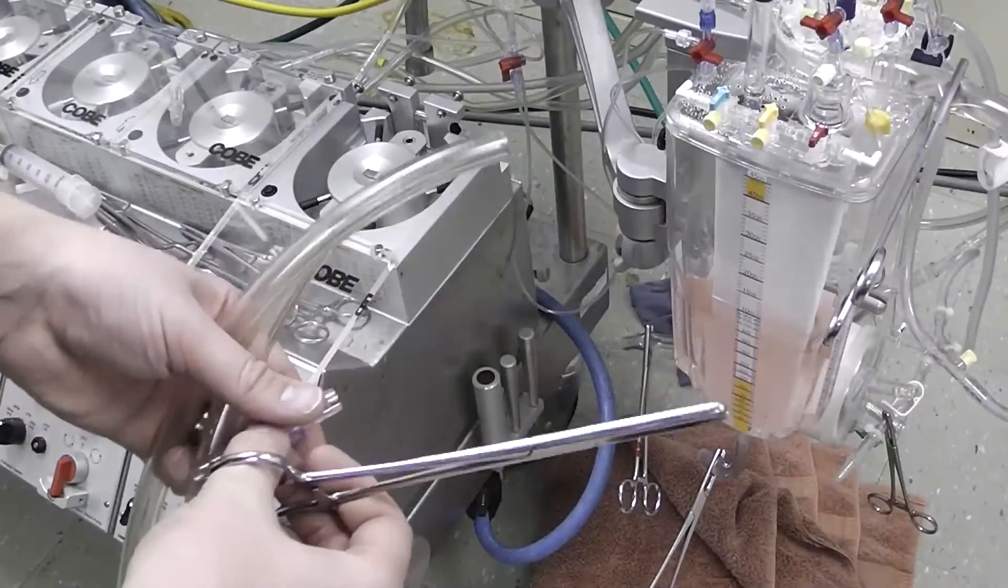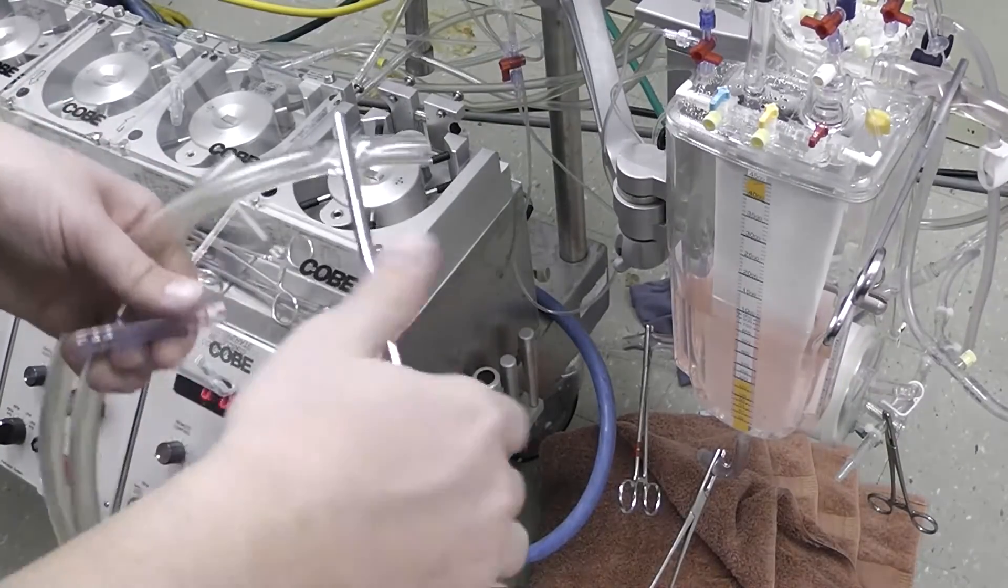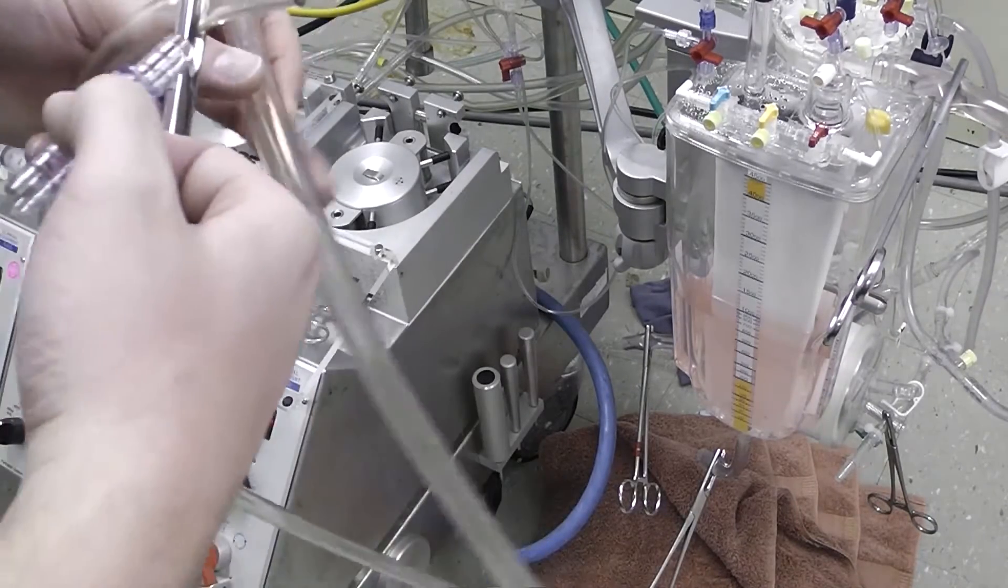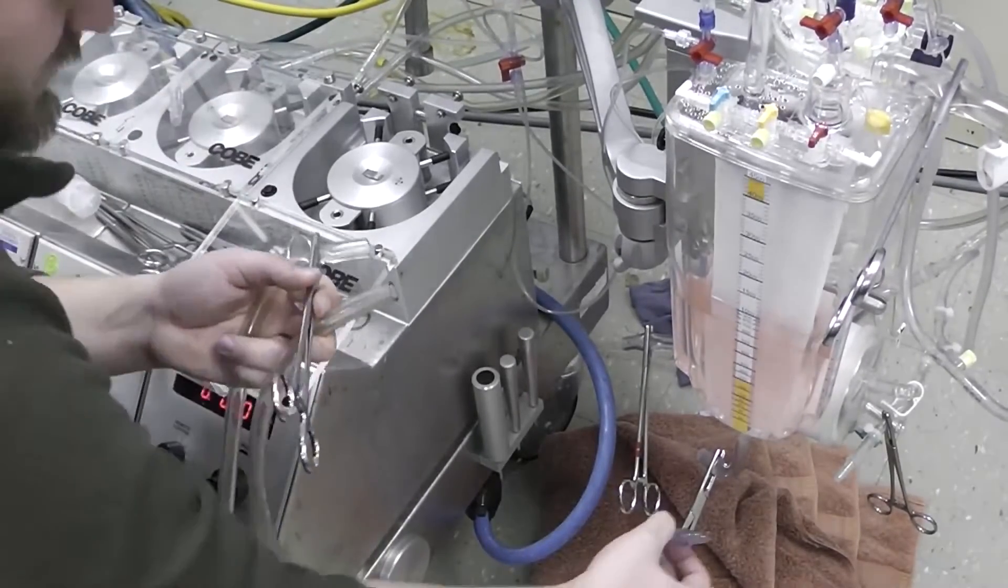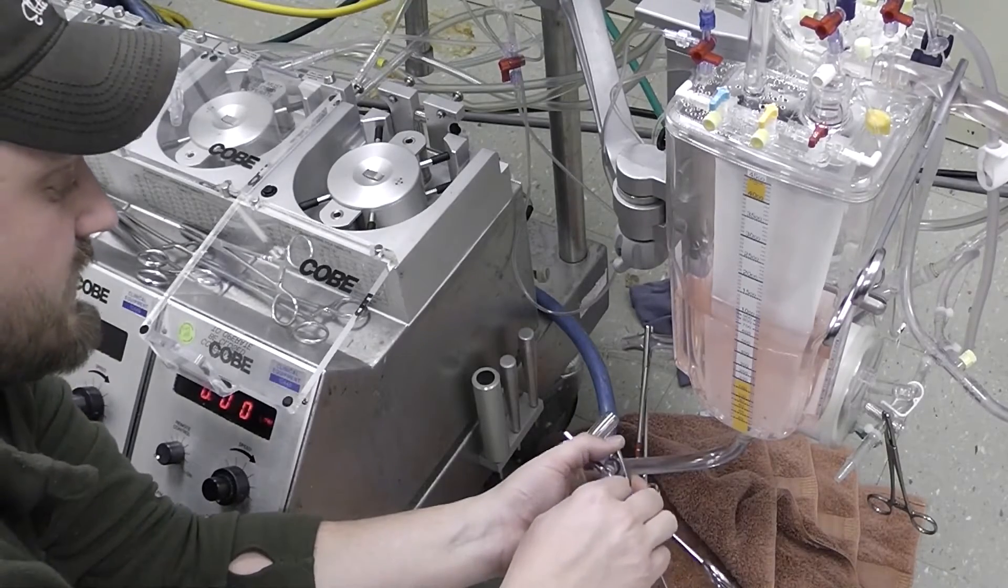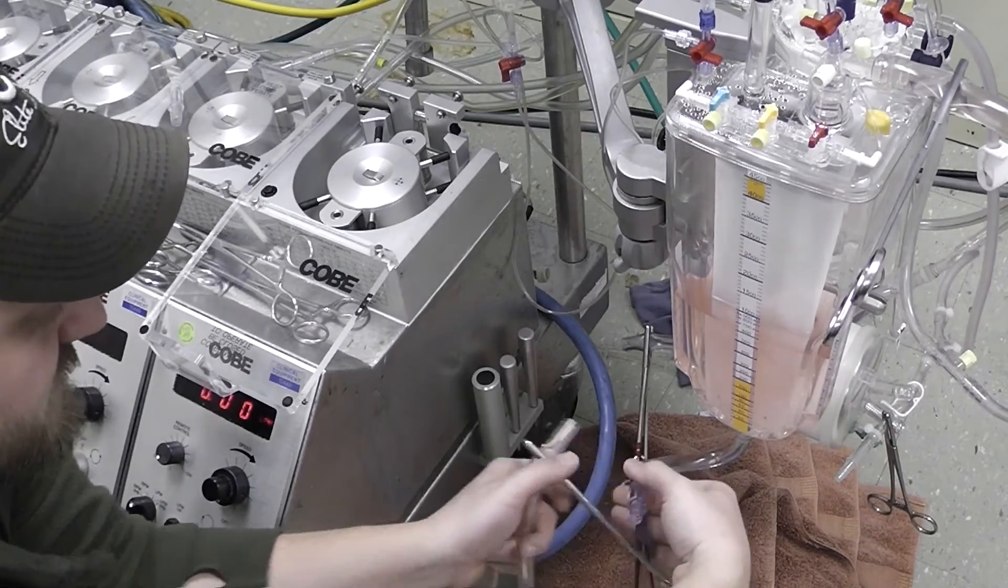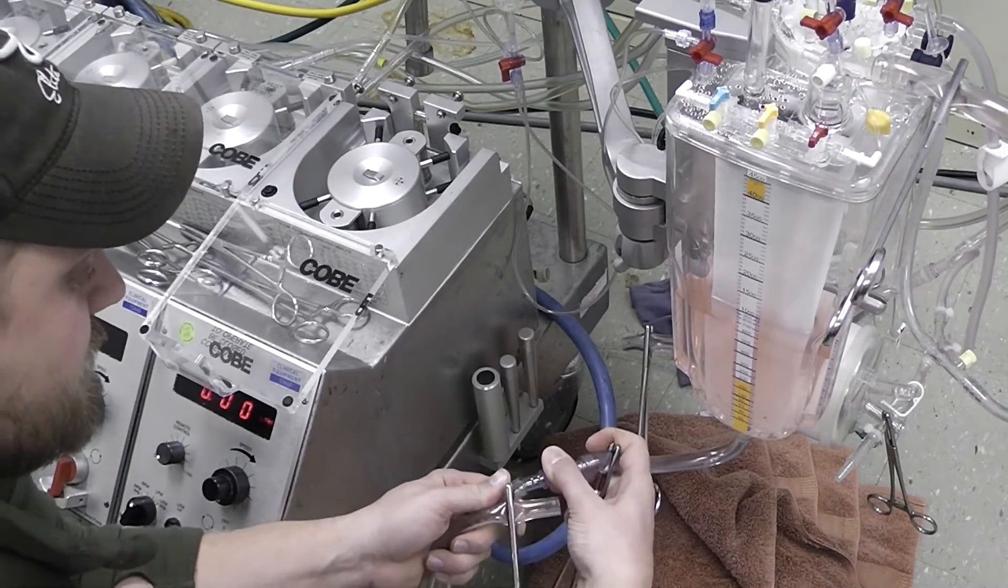Now we're going to take the new line and we're going to put a clamp at the distal end of it, and of course we're going to be keeping all this sterile. Then we're going to take a three-eighths inch connector and attach it to the outlet of the reservoir and attach it to the open end of the tubing.